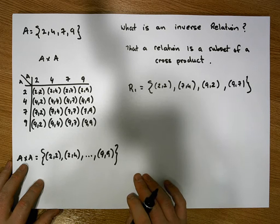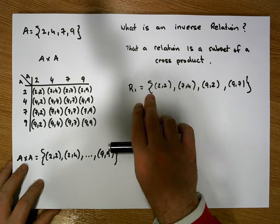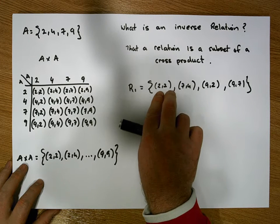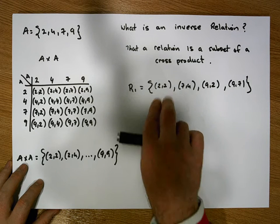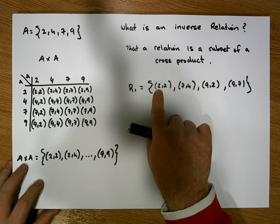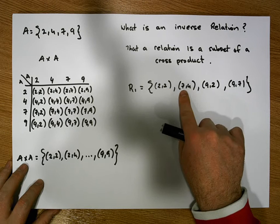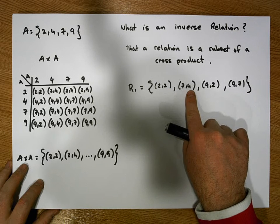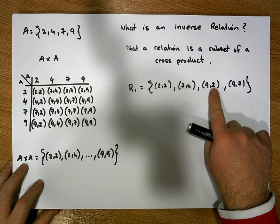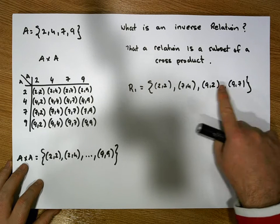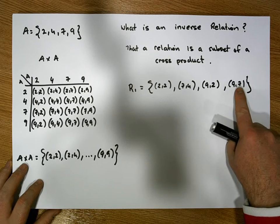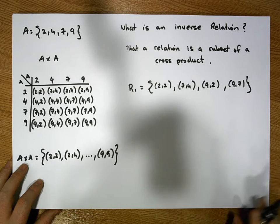So this is the relation R. We can interpret these ordered pairs as mappings: 2 is mapped to 2, 7 is mapped to 4, 9 is mapped to 2, and 9 is mapped to 7.